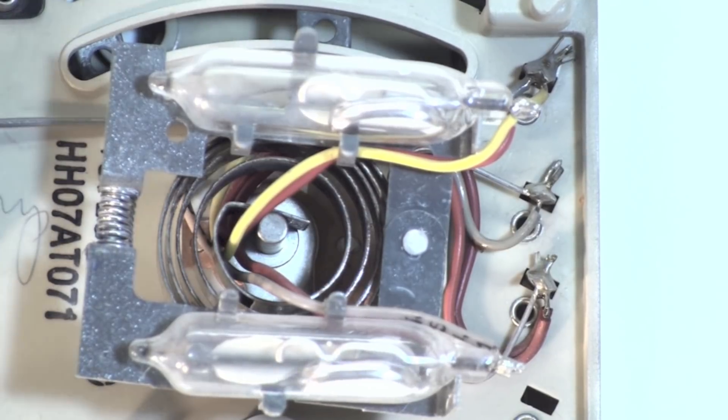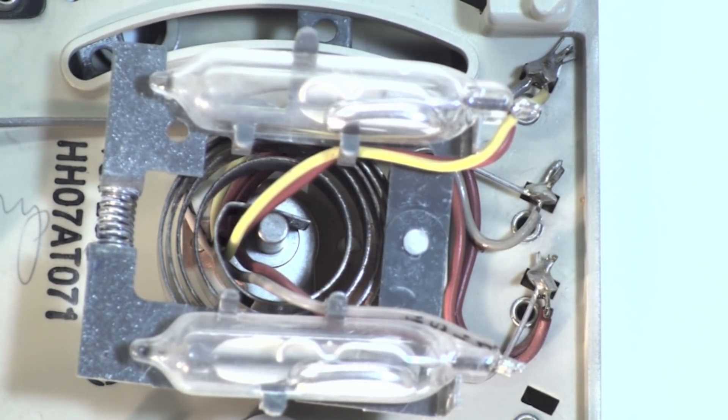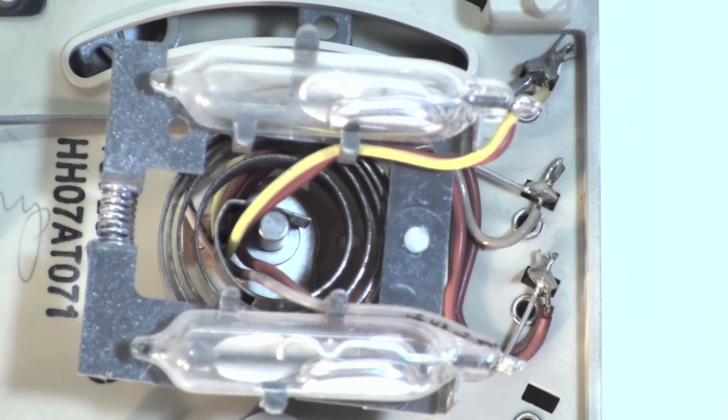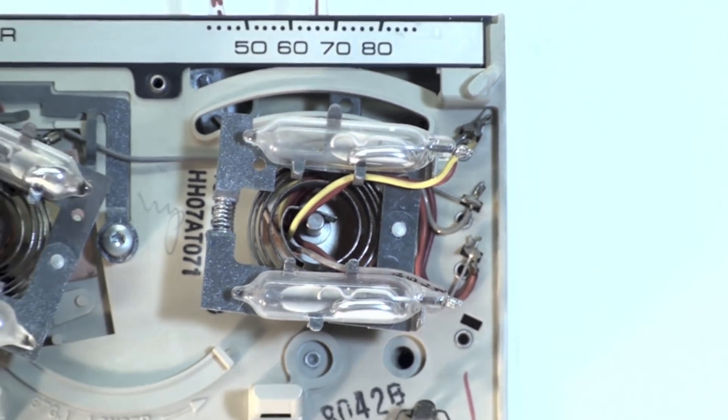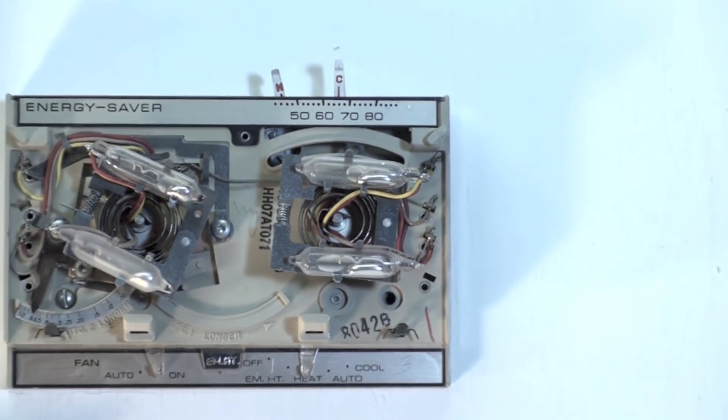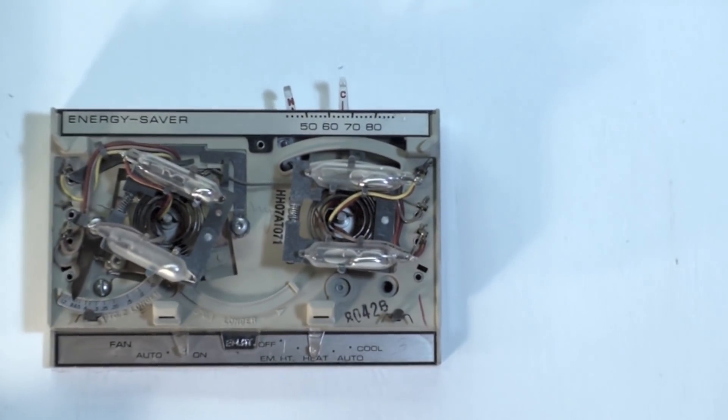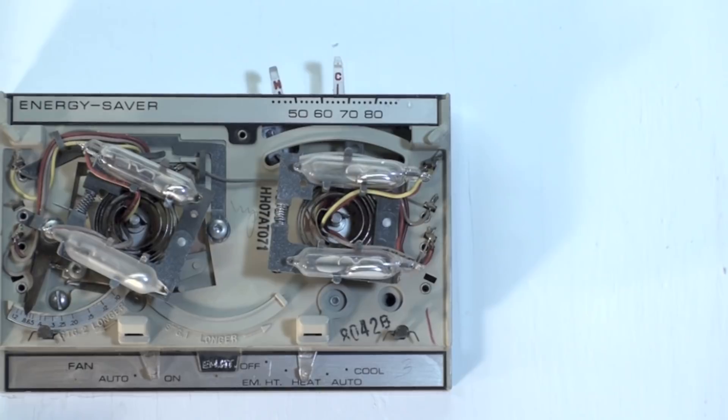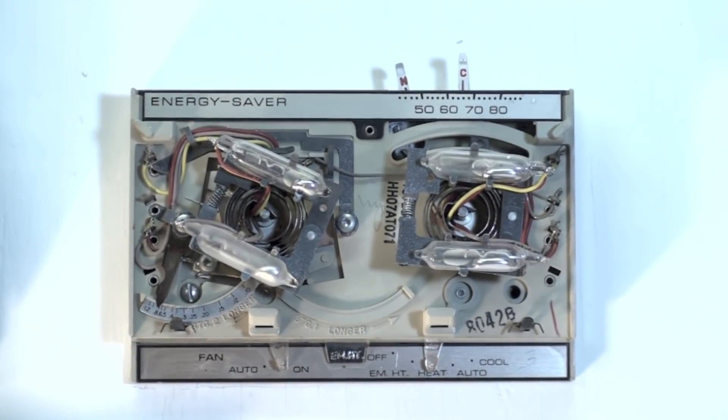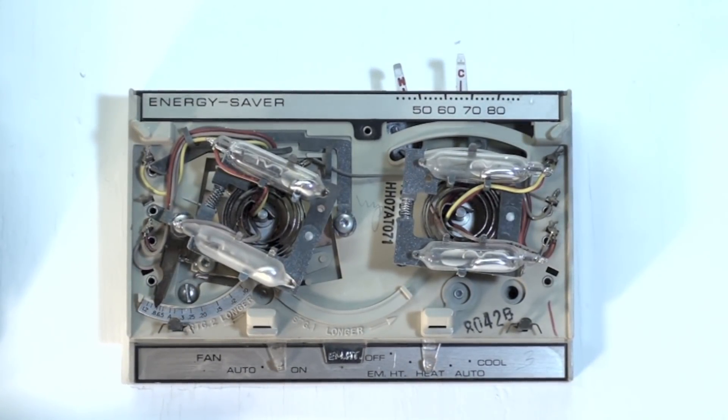Mercury bulb thermostats were very common throughout this industry for many, many years. They are gone now for obvious reasons. Mercury is not something we really want to use because of the hazardous nature of the material. You're not supposed to dispose of those things in the trash. You're actually supposed to dispose of those as hazardous waste.